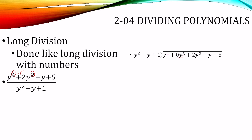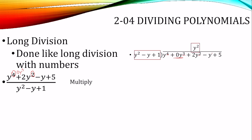So now we have fourth, third, second, first. To divide, we divide the first terms: y to the fourth divided by y squared is y squared. Then we multiply — y squared times y squared is y to the fourth, y squared times negative y is negative y cubed, and y squared times one is y squared. Then we subtract: y to the fourth minus y to the fourth is zero. Zero y cubed minus negative y cubed, which is plus y cubed, gives one y cubed. And two y squared minus y squared is one y squared.